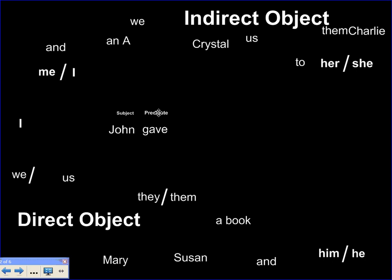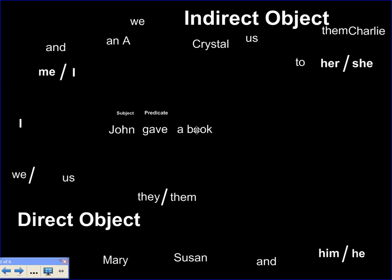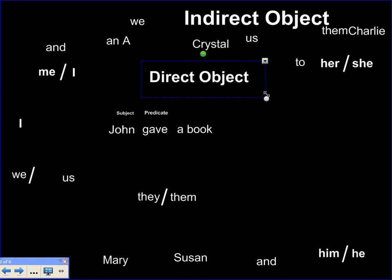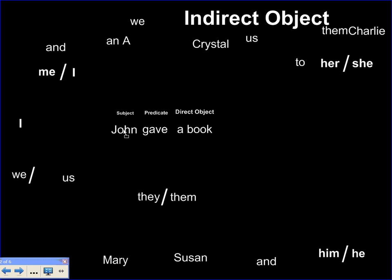Now, gave is a little bit different, because John has to give what? He's giving something. What is it that he's giving? Let's say he's giving a book. John is giving what? A book. Now, if this answers the question — what is John giving? — and answers the question presented by the subject and the predicate, in the form of what, that makes it the direct object. So, John — subject, noun — gave — predicate. Gave what? A book, making this the direct object.